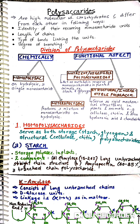We will now study the details of polysaccharides, starting with homopolysaccharides, which include both storage and structural types. The first one is starch. Starch is a homopolysaccharide of the storage type. There are two components in starch: amylose (alpha amylose) and amylopectin.